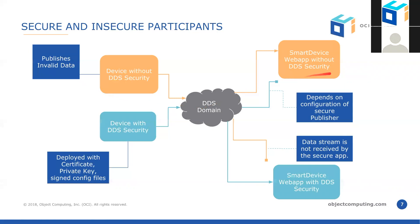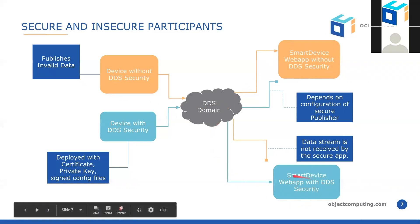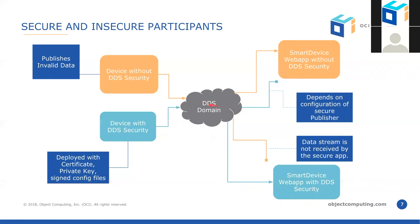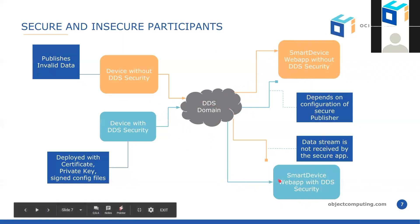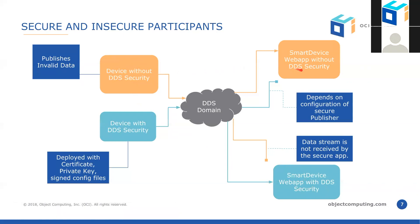On the receiving side, we have the smart device web app without DDS security enabled on top, and below it the smart device web app with DDS security enabled. The smart device web app with DDS security will not see the imposter data, because a secure authentication could not be established between the secure app and the device without DDS security. Similarly, the insecure web app won't see the data from the secure device because that data is encrypted and it has no decryption keys for it.